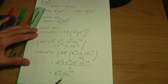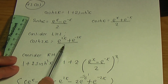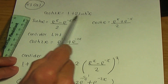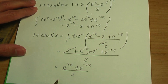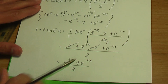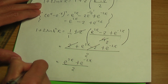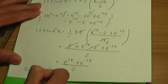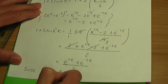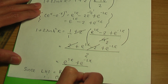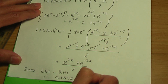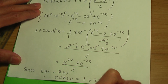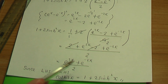The left-hand side, which is e to the 2x plus e to the minus 2x all over 2, does indeed match the right-hand side after simplification. Since the left-hand side equals the right-hand side, we have proven that hyperbolic cos 2x is indeed equal to 1 plus 2 hyperbolic sin squared x.